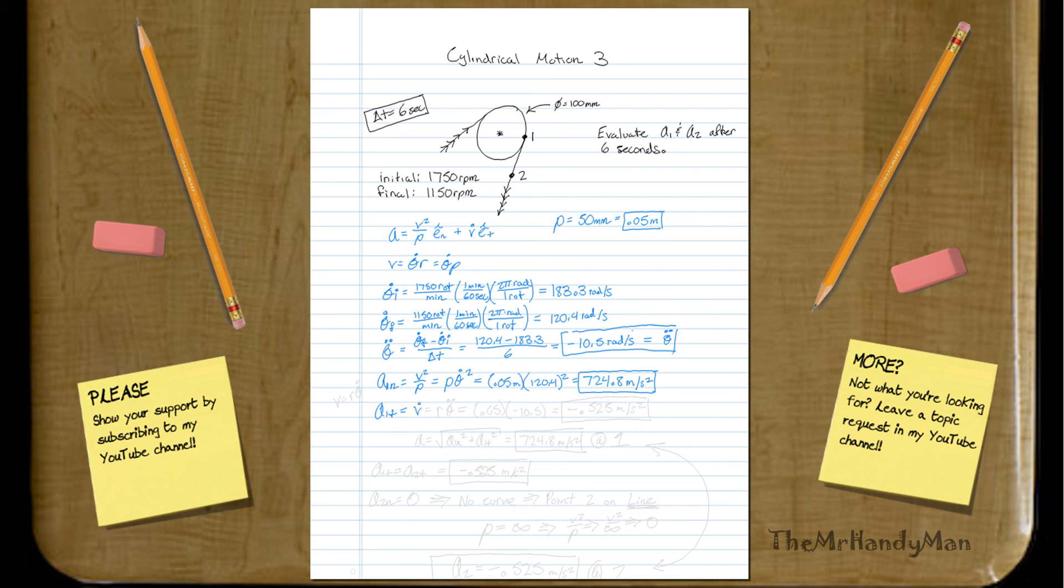Okay, so let's see how everything else lines up. A1t, that would be essentially v dot. Which, well, v dot would be, we know v is equal to r theta, or rho theta, right? Theta dot, so v dot would equal r theta double dot. Aren't you glad that we solved for that? So it would be 0.05 meters times negative 10.5 radians per second squared, which, when you work that all out, that equals negative 0.525 meters a second squared.